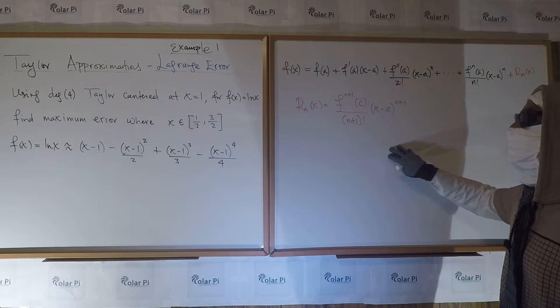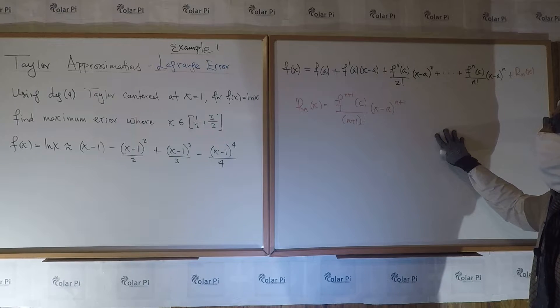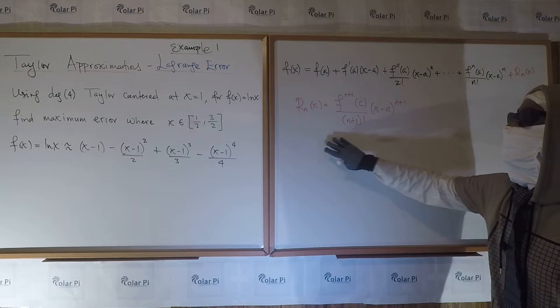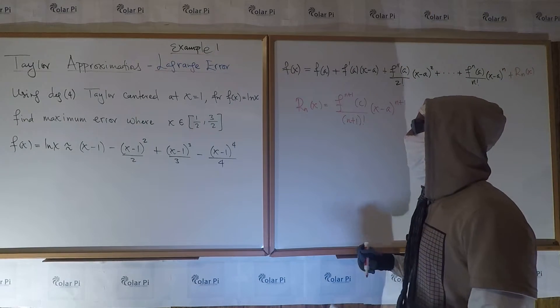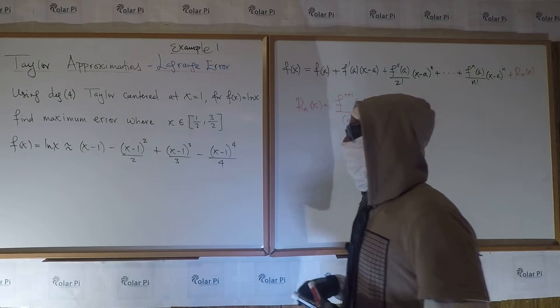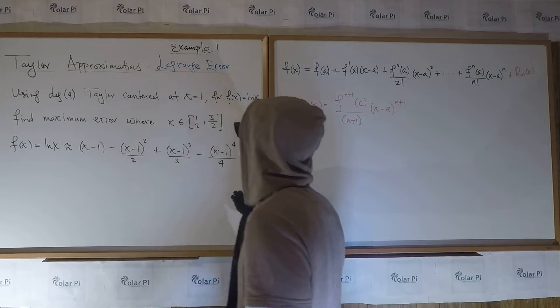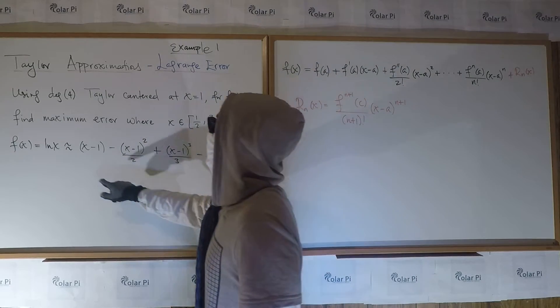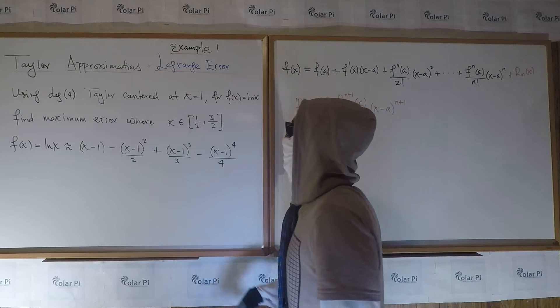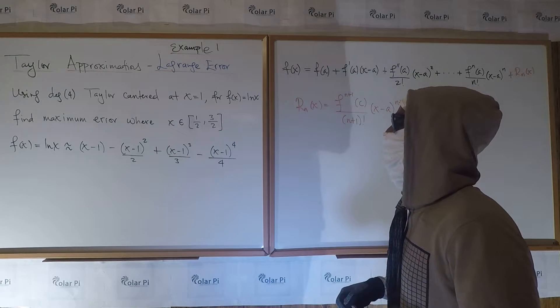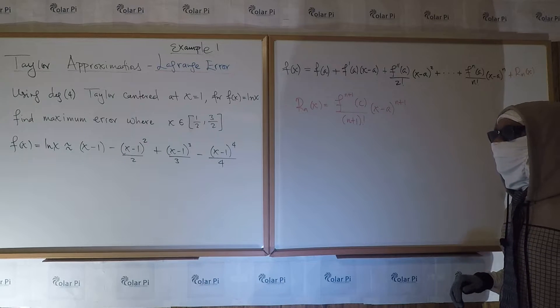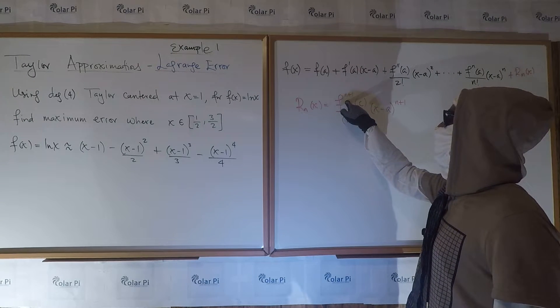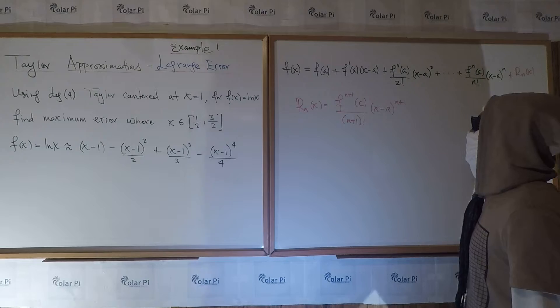Why rn of x, the Lagrange error term, is a way to find a good bound for the error in using the nth degree Taylor. Now, if you have this handy, cool, but you don't have to find the actual nth degree Taylor at a particular center in order for you to work with rn of x and to find a bound. But you do need the fifth derivative for whatever function you're working with.